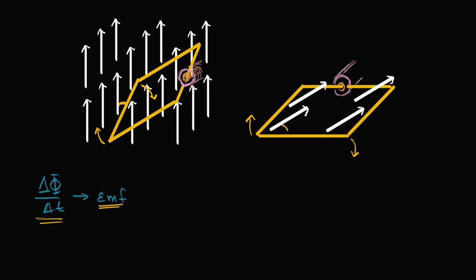After some time delta t, rotating at a constant rate, the magnetic field vector shifts such that the component perpendicular to the surface — which is what we care about for flux — increases. This continues until we get to the flat point, until we have our loop being completely flat. So we're going to have an increase in flux over that time.